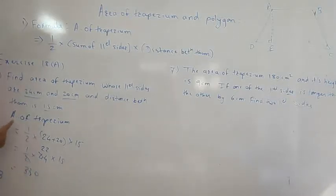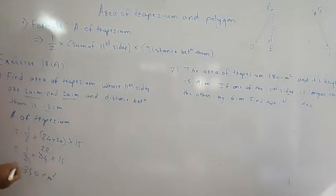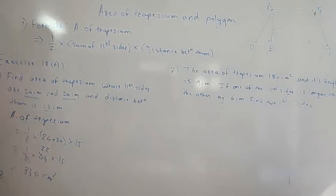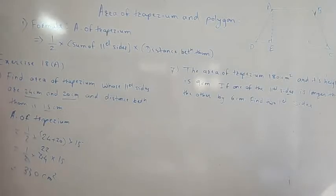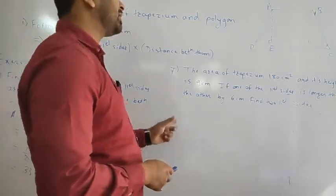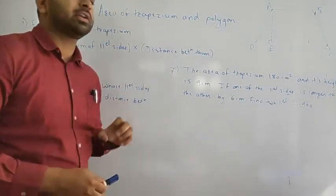Solving the bracket first: 24 plus 20 equals 44, then half of 44 is 22, and 22 multiplied by 15 equals 330. So the area is 330 centimeters squared, because all the given values have units of centimeters. Now we will move forward and see one more numerical from the same exercise — numerical number 7.